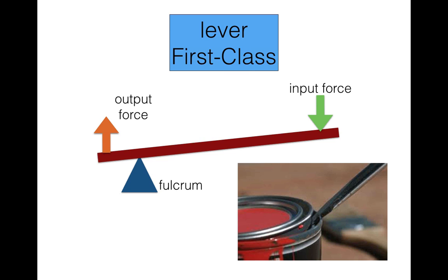Notice that the direction of the input force — the force that's applied by the person — is on the far end. That's the input force or input arm, and then the fulcrum is in between, and then you have an output force. The real-life experience that best fits this first class lever is opening up a can of paint.